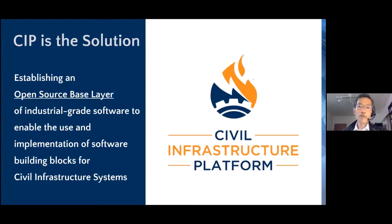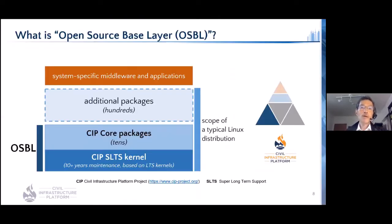By being motivated to solve these issues, Civil Infrastructure Platform, known as CIP, aims to develop building blocks to satisfy industrial requirements with open sources. We named such building blocks the Open Source Based Layer, in short, OSBL. OSBL consists of CIP SLTS kernel and CIP core packages. SLTS stands for Super Long Term Support, and we aim to maintain SLTS kernels for 10 plus years. CIP core packages contain only dozens of packages, carefully selected and likewise maintained for the long term.